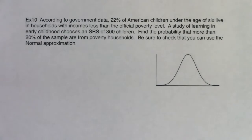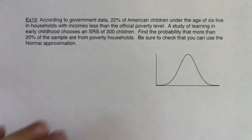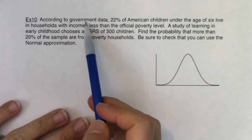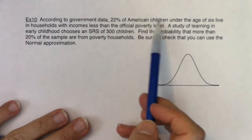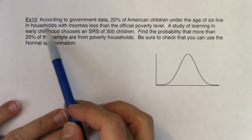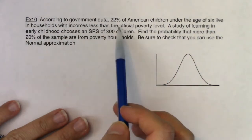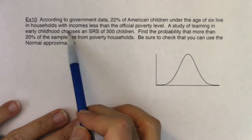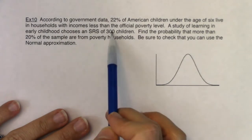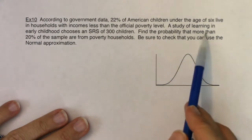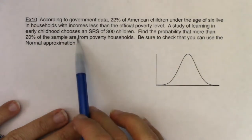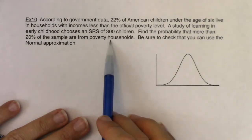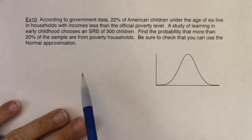As I read this, let's listen for what the variable is in this problem. According to government data, 22% of American children under the age of six live in households with incomes less than the official poverty level. A study of learning in early childhood chooses an SRS of 300 children. Find the probability that more than 20% of the sample are from poverty households. Be sure to check that you can use the normal approximation.